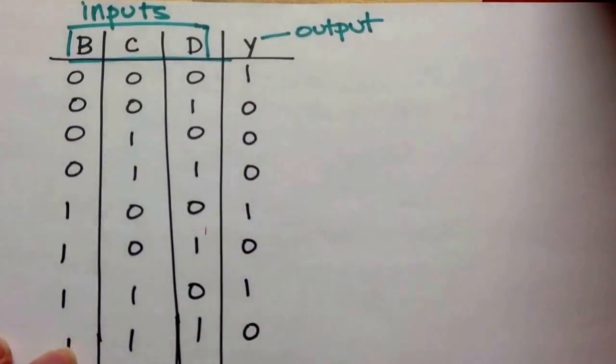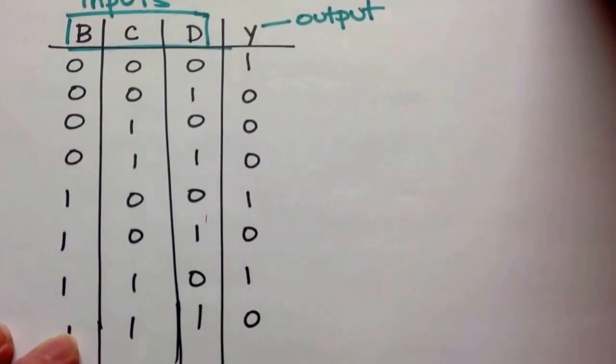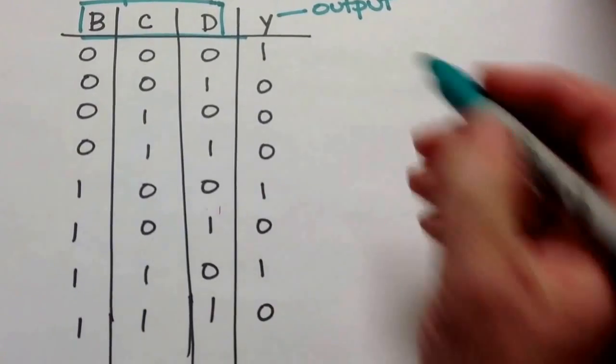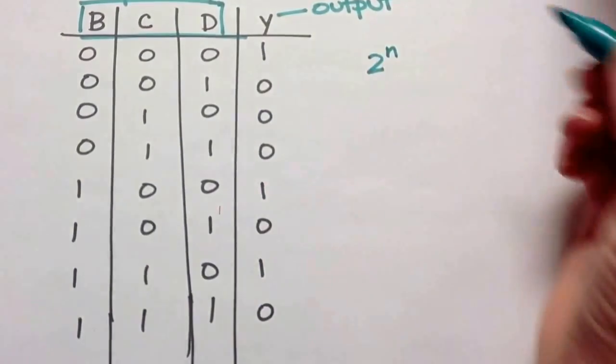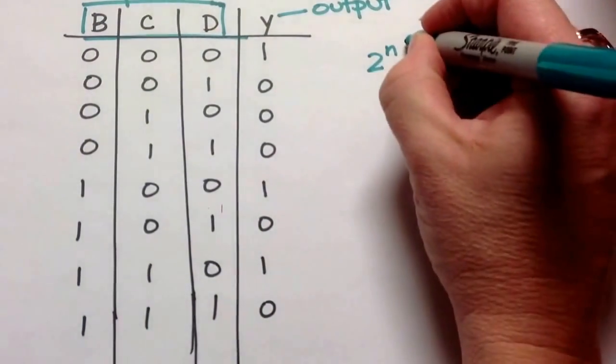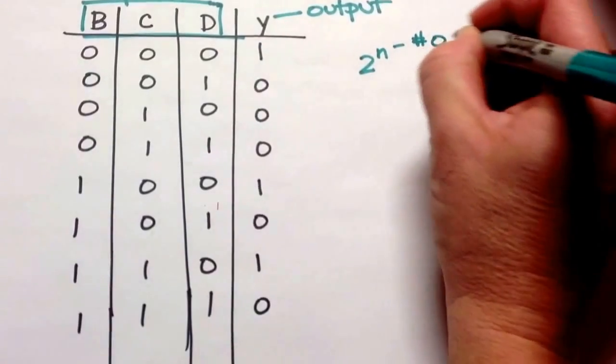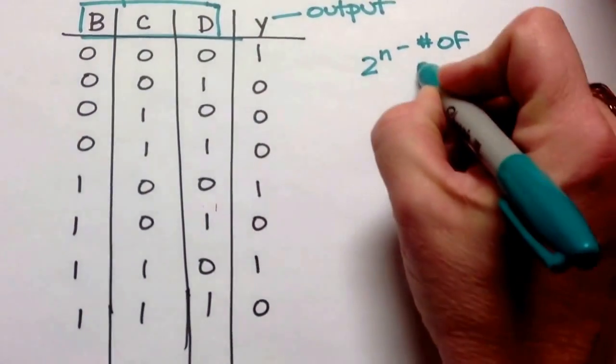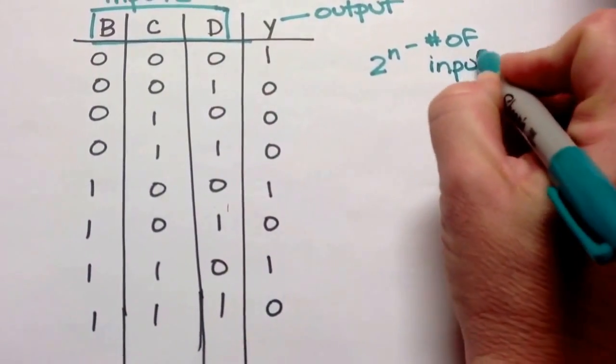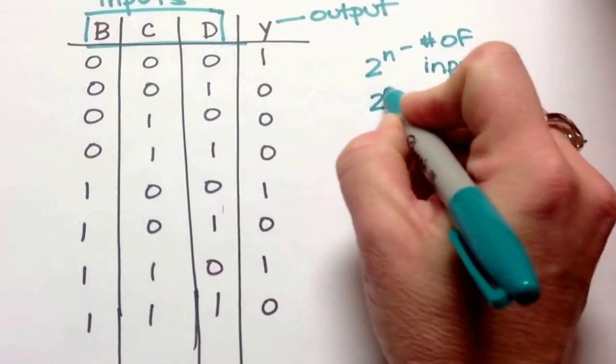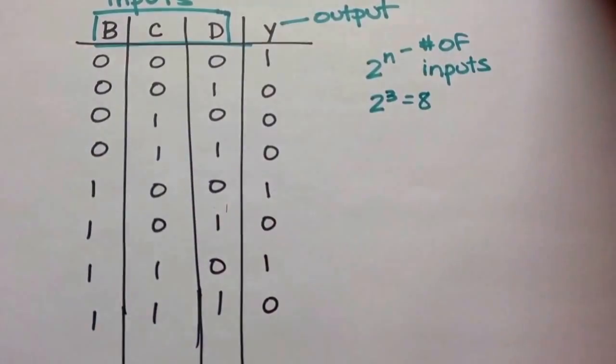And again, since it is a three input, we have to have two to the n lines. n is the number of inputs. So we have two to the three, and that's eight. So we have eight lines.